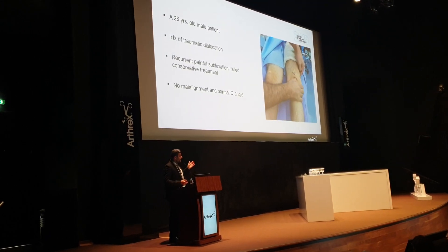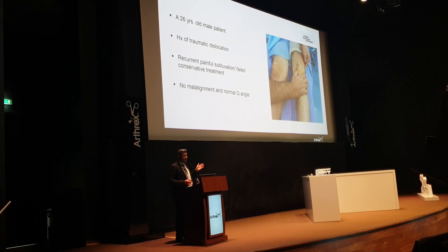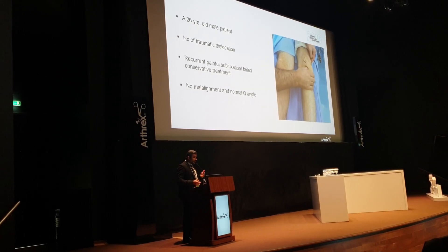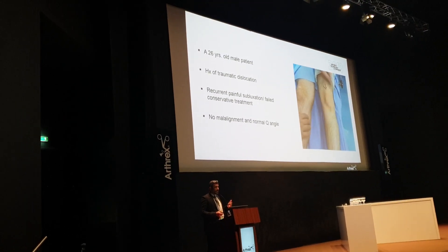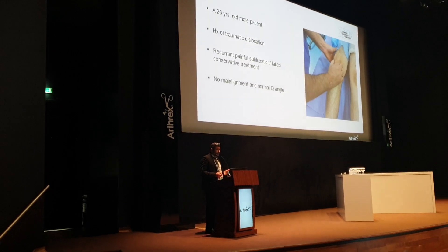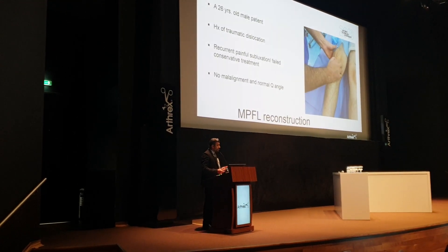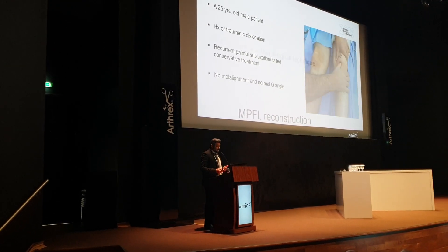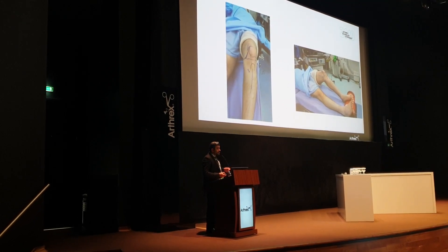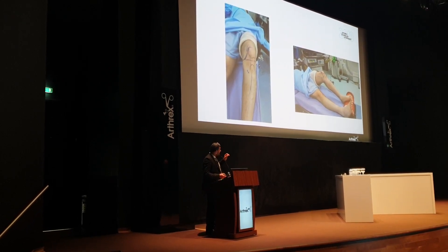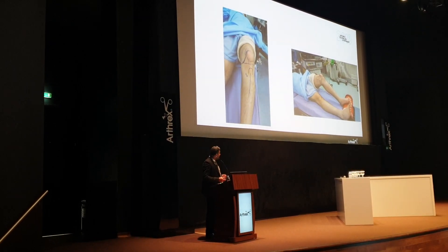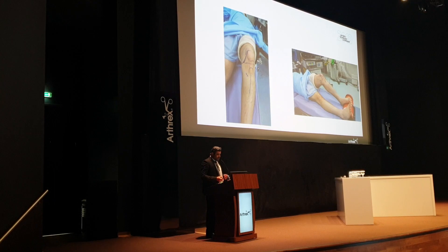Let's take this example. This is a young dentist who had a first-time traumatic dislocation and has normal alignment with normal Q-angle. Here, it is clear that the best choice is to do MPFL reconstruction. Here are some technical aspects: we have to do proper positioning for the patient. When we tension the MPFL, it should be around 30 to 45 degrees. You mark your incision.